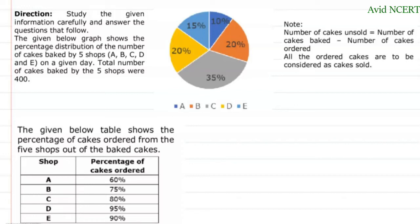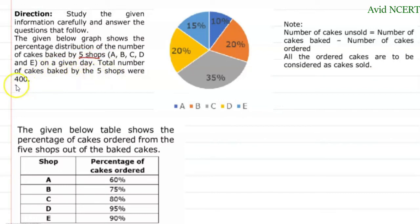Hello viewers, welcome to my channel. This is Geeta. Study the given information carefully and answer the questions that follow. The given graph shows the percentage distribution of the number of cakes baked by five shops on a given day. The total number of cakes baked by the five shops was 400.